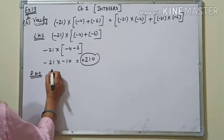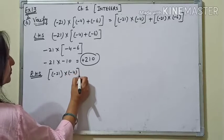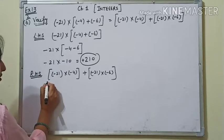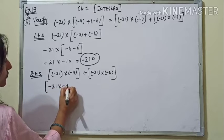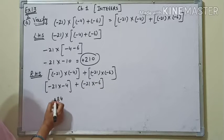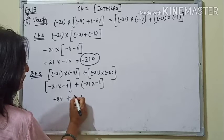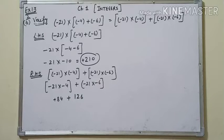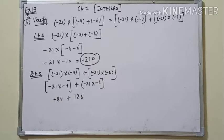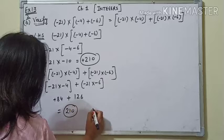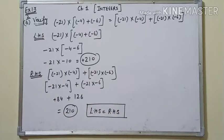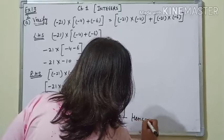अब हम RHS की तरफ चलते हैं। RHS: (-21) into (-4) plus (-21) into (-6). पहले small bracket open करेंगे। (-21) into (-4): 21 × 4 = 84, positive आया क्योंकि minus के 2 signs हैं। Plus (-21) into (-6): 21 × 6 = 126, यहाँ भी positive। 84 + 126 = 210। LHS equal to RHS। Hence verified.